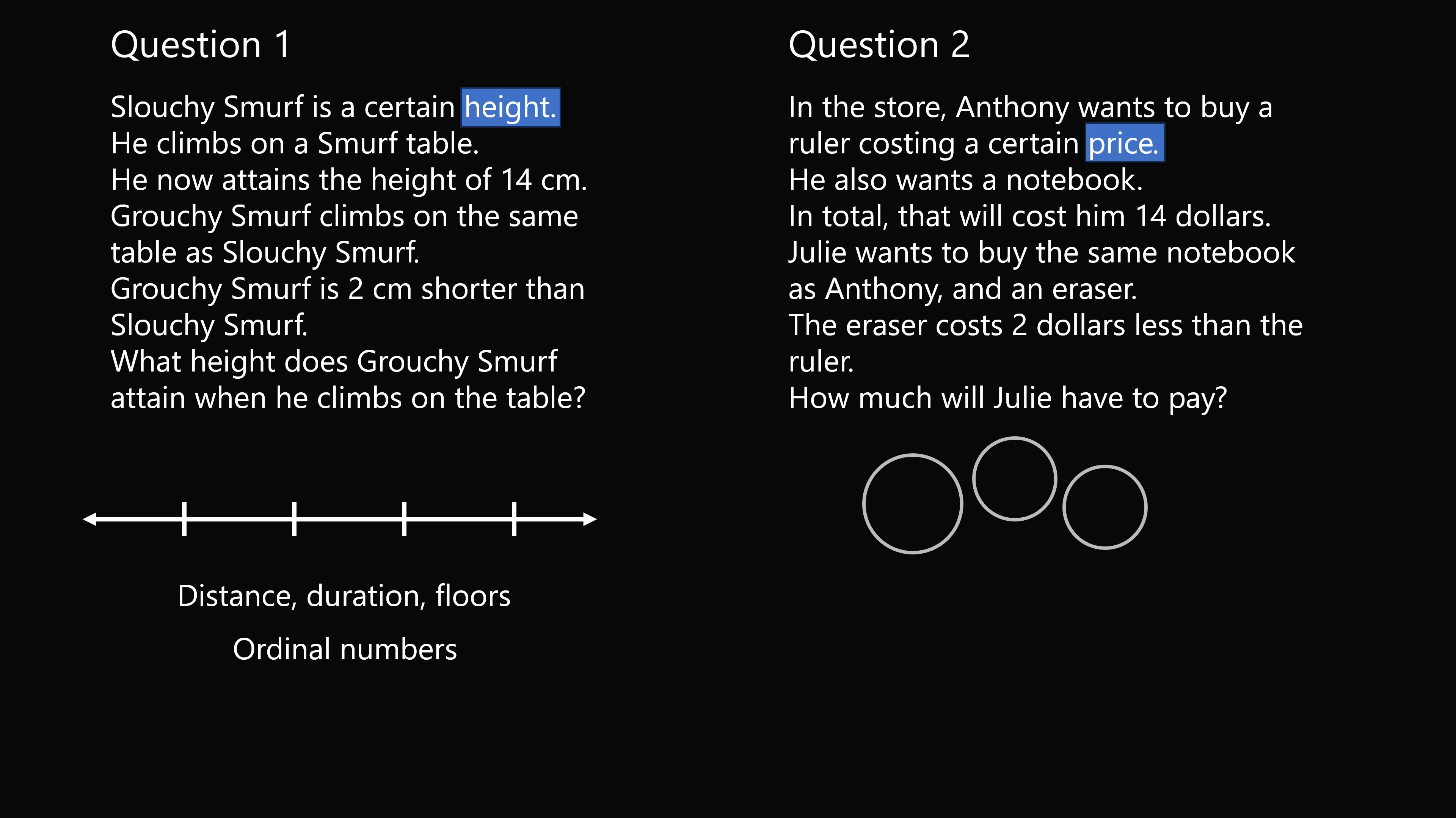On the other hand, price is a type of number we think more about as a collection of a set. So we think about collections, price, weight. These have a size, but they're not in any particular order. And we call these cardinal numbers.